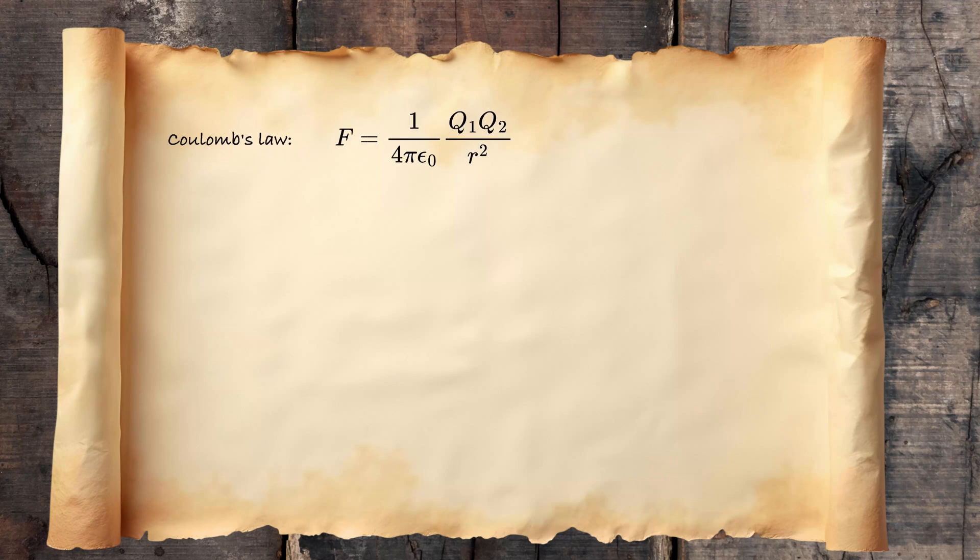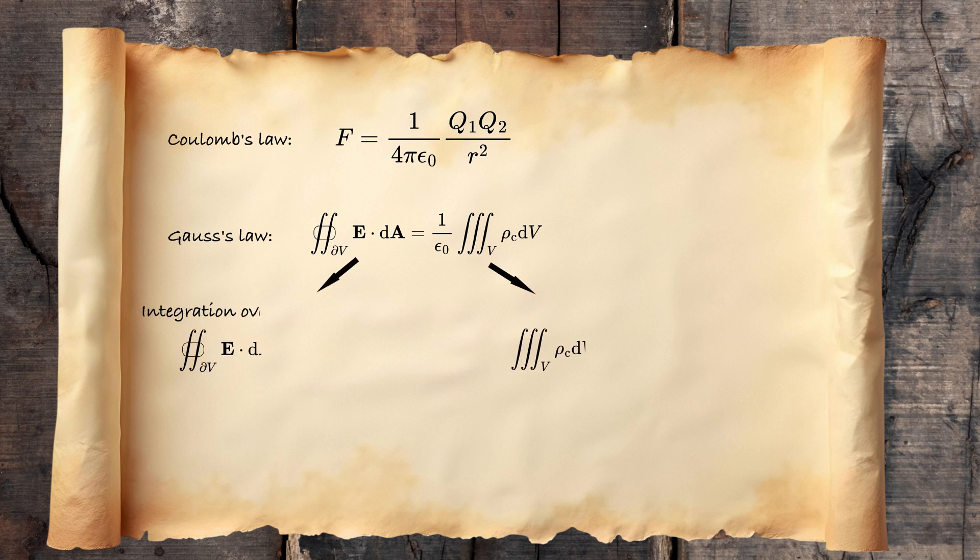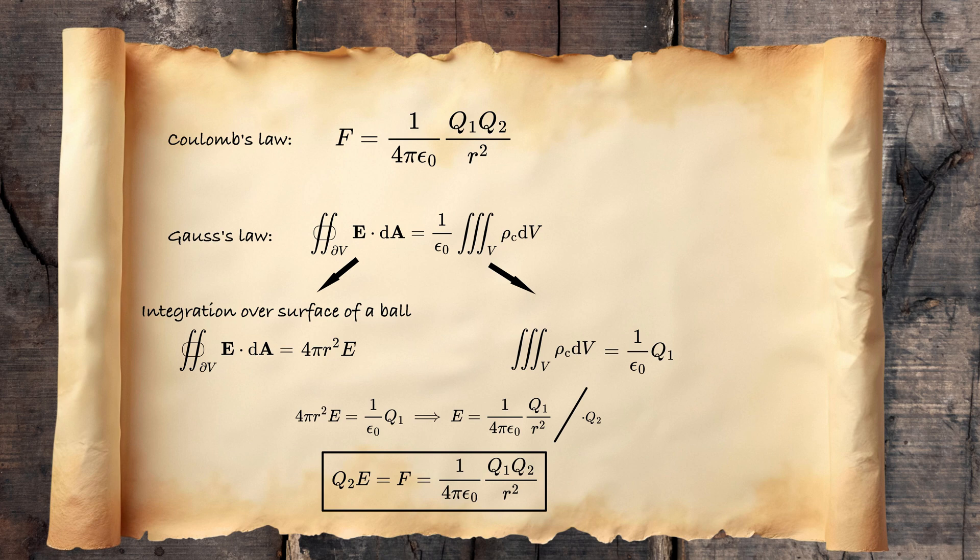If we go back to the Coulomb's law, in modern notation we write it like this to make it consistent with the Gauss law. So this four pi is not arbitrary, but it's a remnant of the integration over the surface. I will probably shine light on permittivity and permeability in another video, so it should become more clear why all these equations work the way they do.